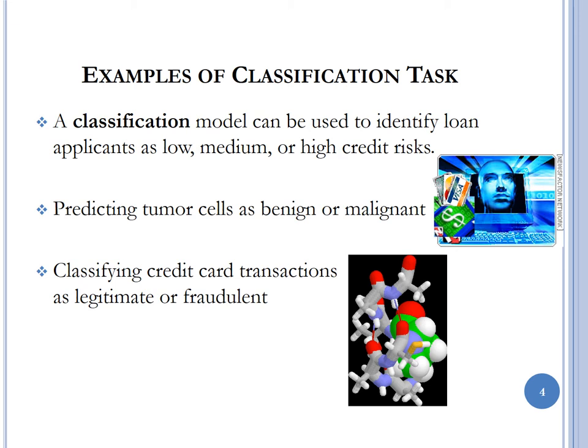Classification can also be used in medicine to predict tumor cells as benign or malignant, in finance to classify credit card transactions as legitimate or fraudulent, and in education to model what determines a student passing or failing a course. More broadly, it can identify factors that influence a client accepting or rejecting a product offer, helping make business decisions based on patterns that determine what grouping or class an object or person is placed in.